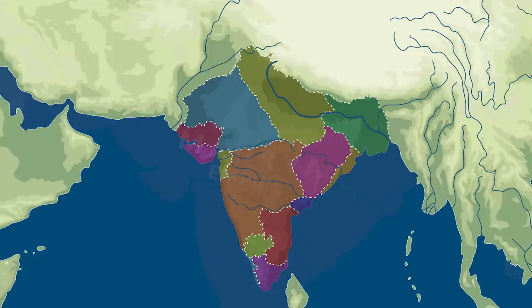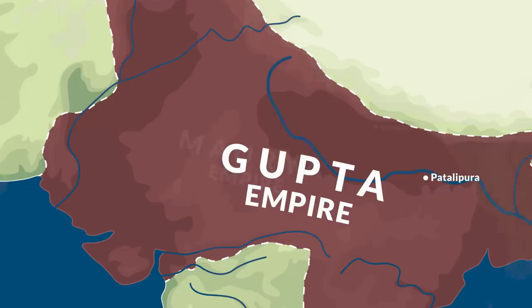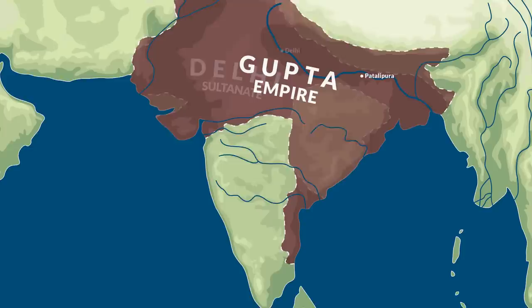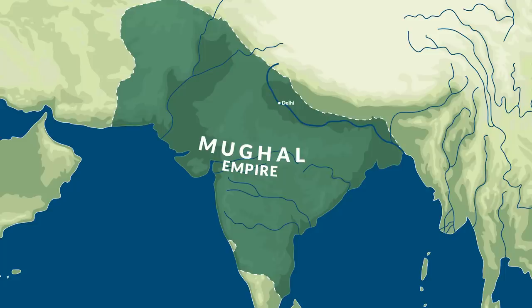Like Europe, India is comprised of many different types of people, often with their own unique languages and culture. In ancient times, it was really only united twice — first by the Maurya Empire, and then by the Gupta Empire. But even in those cases, the unification was not complete. During the medieval period, the only state that came close to unifying India was the Delhi Sultanate. But then in the 16th century came the Mughal Empire, an Islamic empire with rulers of Mongol and Timurid descent. The Mughals managed to conquer more of India than anyone since the Mauryans. They are the ones who built the famous Taj Mahal. Which brings us to the Marathas.